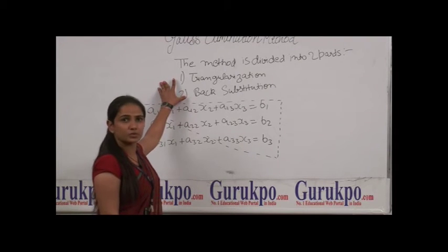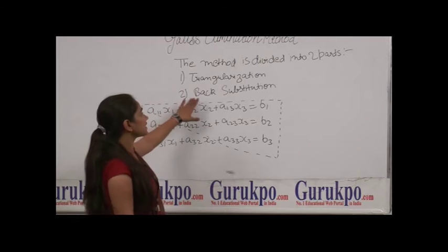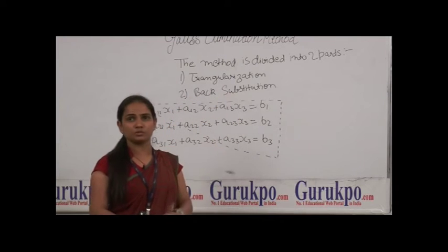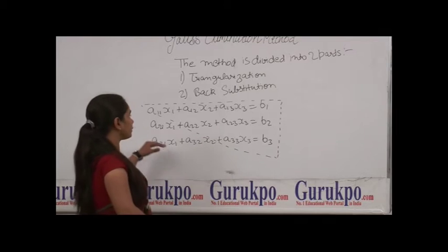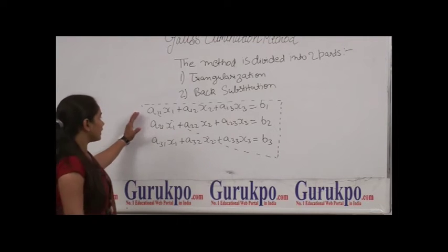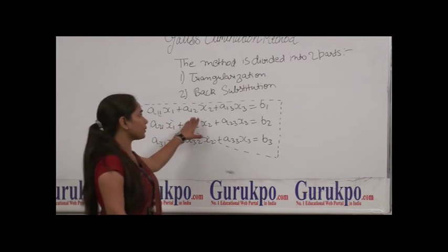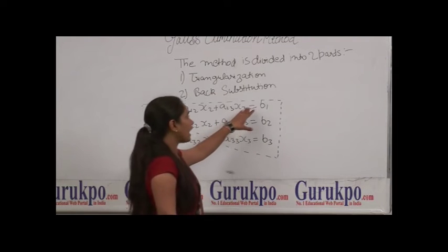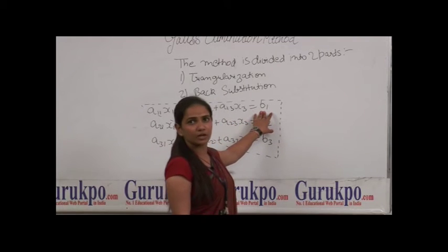The first part covers triangularization and the second part is back substitution. We will be having a system of linear equations of the form A11x1, A12x2, A13x3, and on the right hand side we will be having a constant value.